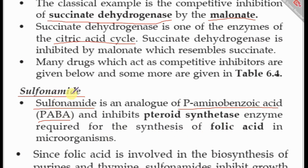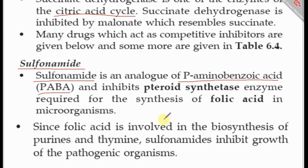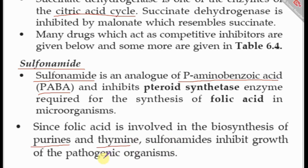Sulfonamides competitively inhibit dihydropteroate synthase, blocking folic acid synthesis in microorganisms. Consequently, there is no further synthesis of nucleotides — purines and pyrimidines — leading to no further growth of pathogenic organisms. This illustrates the real-world antimicrobial action of sulfonamide drugs.